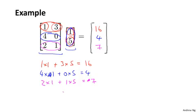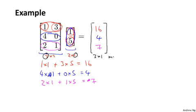It turns out that the result of multiplying a 3 by 2 matrix by a 2 by 1 matrix — which is also just a two-dimensional vector — is going to be a 3 by 1 matrix. In other words, a 3 by 1 matrix is just a three-dimensional vector.